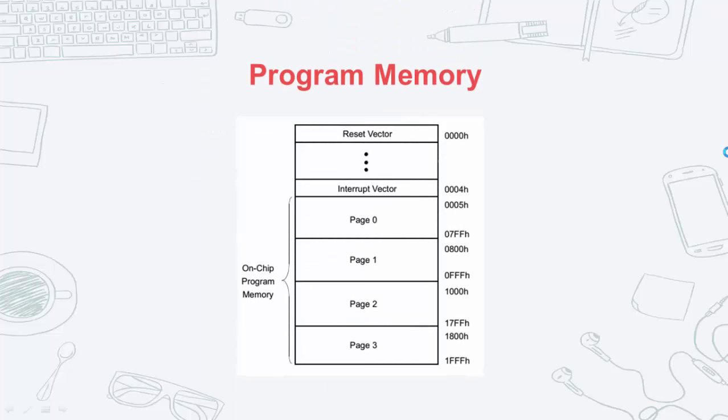Program memory is where instructions are written, or the code you have written is stored. This type of memory is non-volatile, which means that instructions or data written here will be retained even if power is removed. The program memory of PIC 16F877A has 8K words where each word has a length of 14 bits of flash program memory, ranging from address 0000H to 1FFFH.